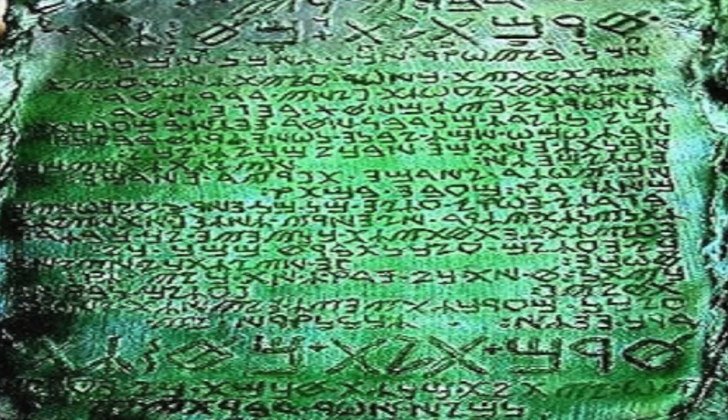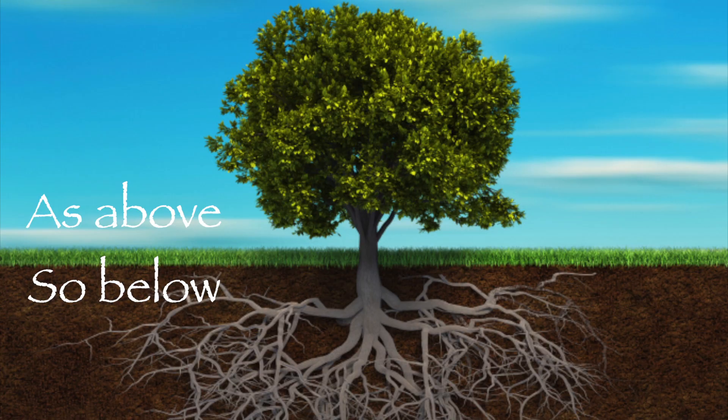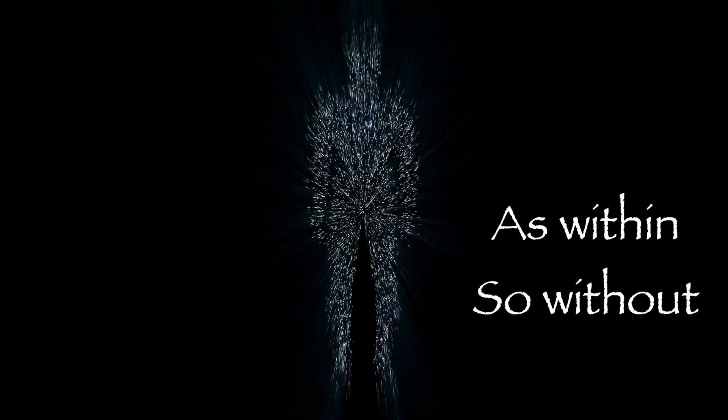The code reads something like this: As above, so below. As within, so without. Some kind of riddle, huh?